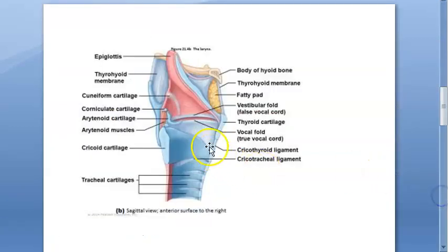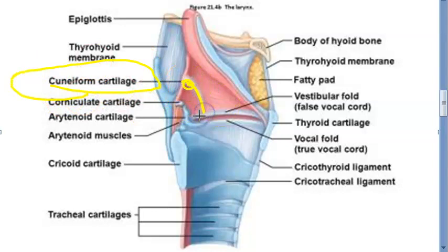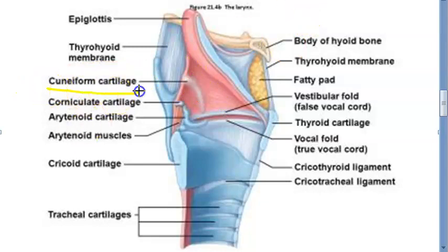The corniculate cartilages, also called cartilages of Santorini, are paired and horn-shaped. Each one articulates with the apex of the arytenoid cartilage, forming the horn of the arytenoid. The cuneiform cartilages, also called cartilages of Wrisberg, are rod-shaped and situated within the aryepiglottic fold in front of the corniculate cartilages, providing passive support to the fold.